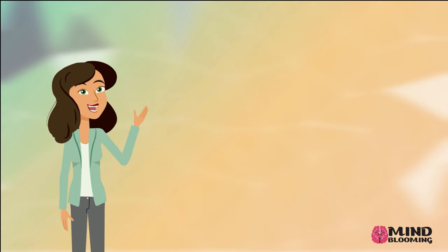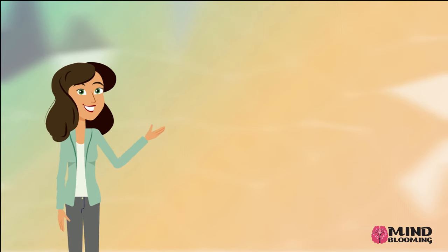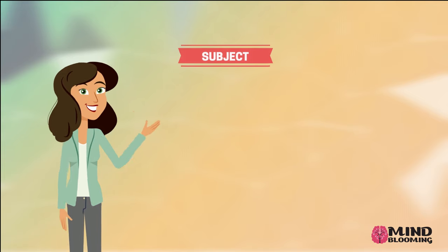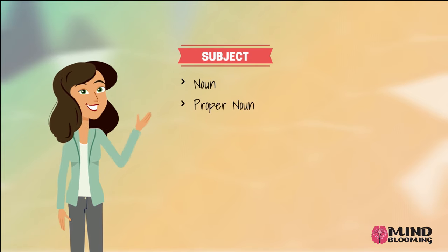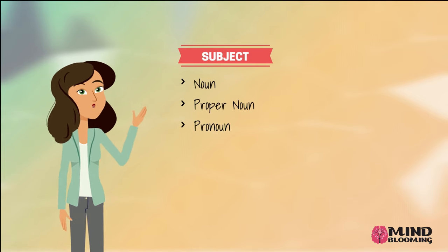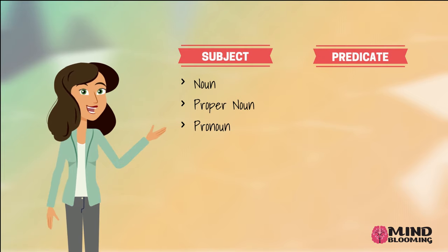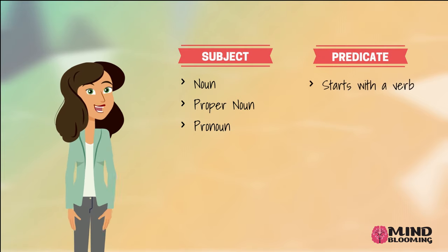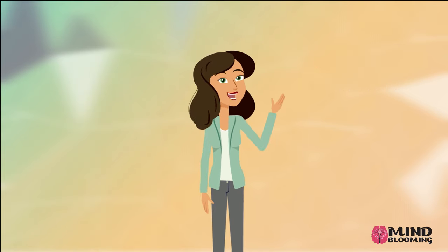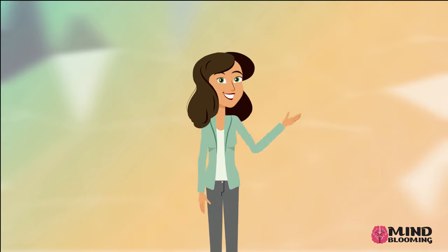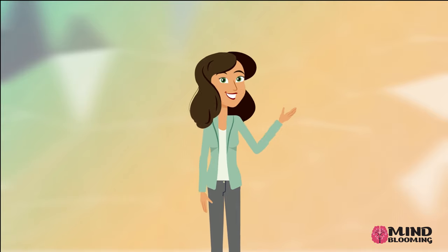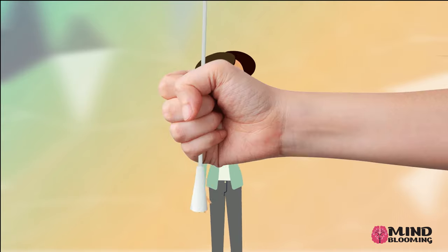Here is a tip to help you find the subject and predicate faster. The subject could be a noun, proper noun, or a pronoun. The predicate always starts with a verb. Now let's together identify the subject and predicate in each of the following examples.